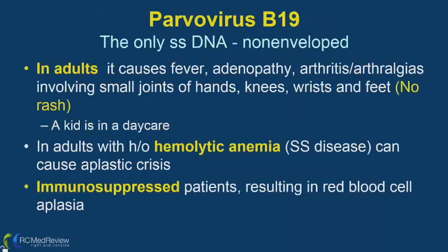For immunocompetent adults, parvovirus B19 can present like rheumatoid arthritis — small joint pain in knees, wrists, and feet with possible fever and adenopathy. The key hint in the exam scenario is that the patient has kids in daycare — that's the clue for parvovirus B19 infection in an adult.